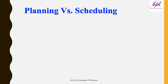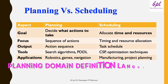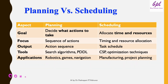Let's discuss the differences between planning and scheduling, comparing them on five aspects: goal, focus, output, tools, and applications. Planning decides what actions to take, whereas scheduling allocates time and resources. Planning focuses on a sequence of actions; scheduling focuses on timing and resource allocation. The output of planning is an action sequence; scheduling produces a task schedule. Planning uses search algorithms and PDDL; scheduling uses constraint satisfaction problems (CSP) and optimization techniques. Planning is used in robotics, games, and navigation; scheduling is used in manufacturing and project planning.